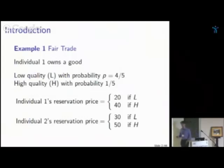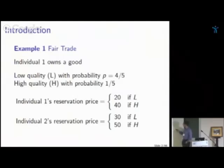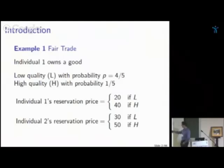There are classic examples in economics — a big part of economics in the early 1970s was about information. Here's a typical Akerlof-style example: an individual owns a good with probability four-fifths it's a low-quality car, a second-hand car, and with probability one-fifth it's a high-quality good. The reservation prices of the two individuals — the owner and the potential buyer — depend on the quality of that car.